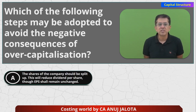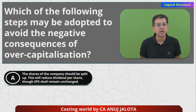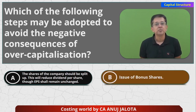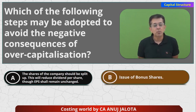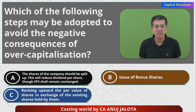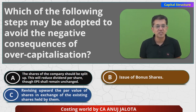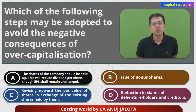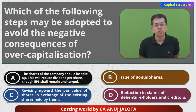Option A: The shares of the company should be split up — this will reduce dividend per share, though EPS shall remain unchanged. Option B: Issue of bonus shares. Option C: Revising upward the par value of the shares in exchange of existing shares held by them. And lastly, Option D: The reduction in the claims of the debenture holders and creditors.